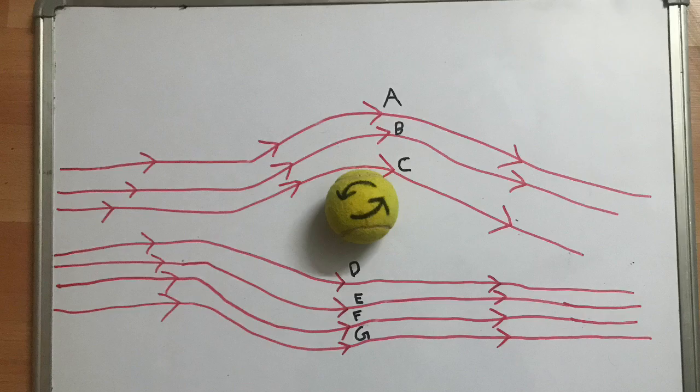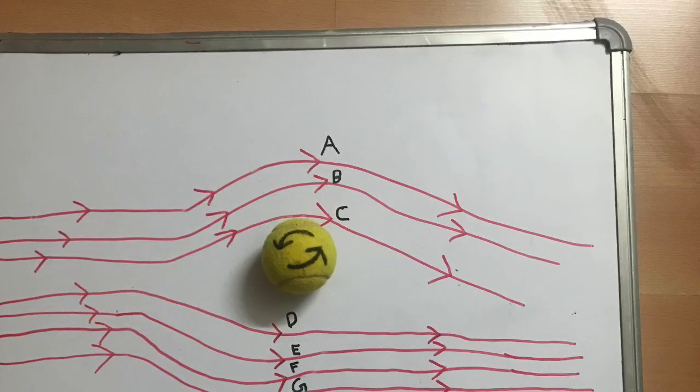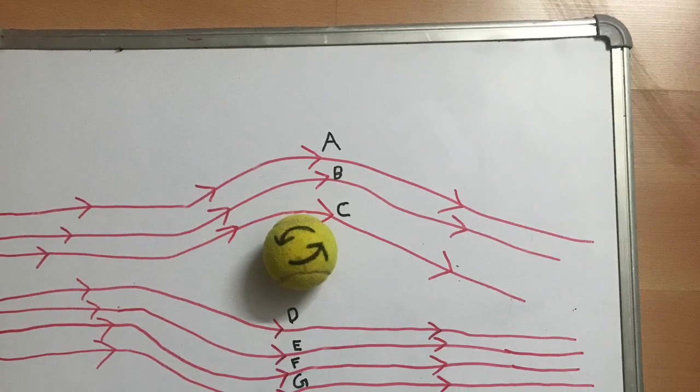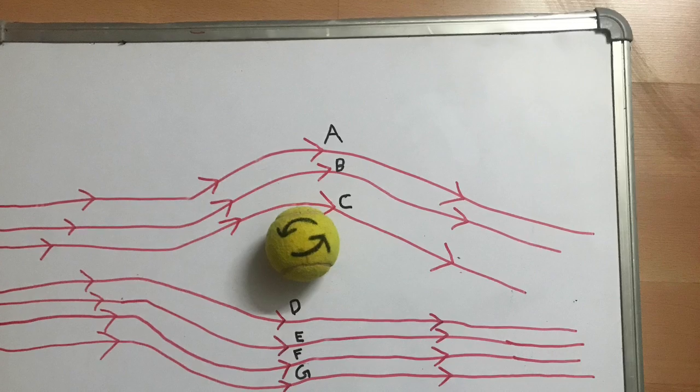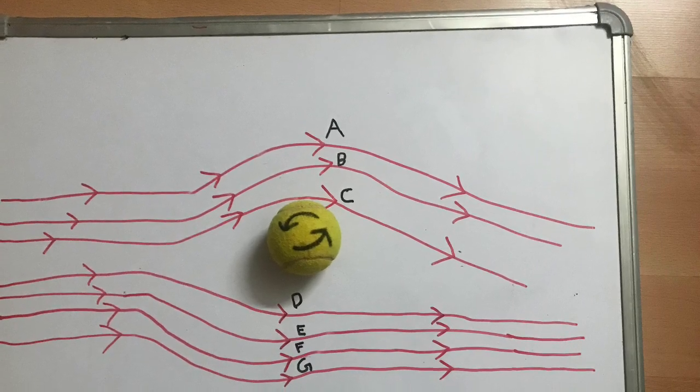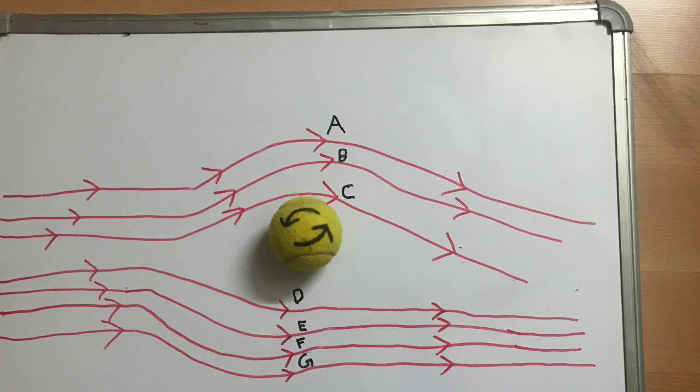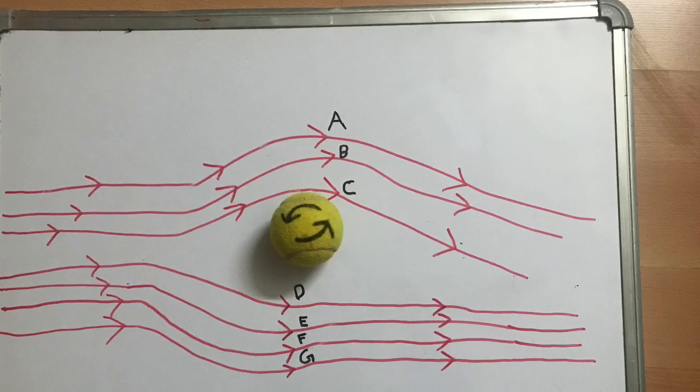Therefore, the spin of the ball causes this air to flow faster, that is, it increases its velocity. On the other hand, the direction of the spin of the ball is opposite to the direction of the air flowing at A, B and C. Therefore, the air flows faster at D, E and F than it does at A, B and C.